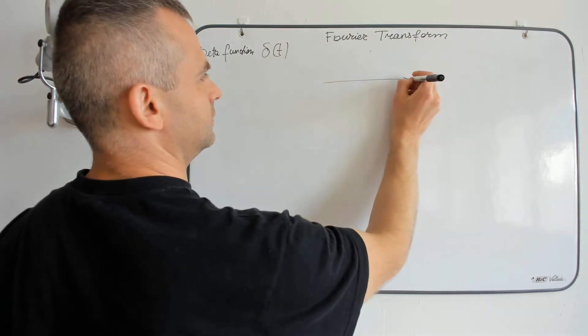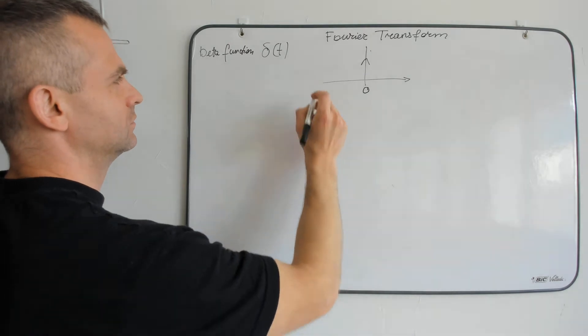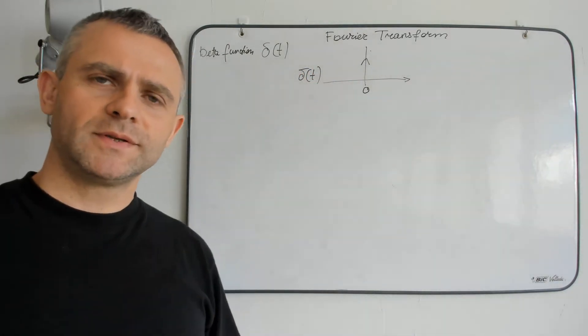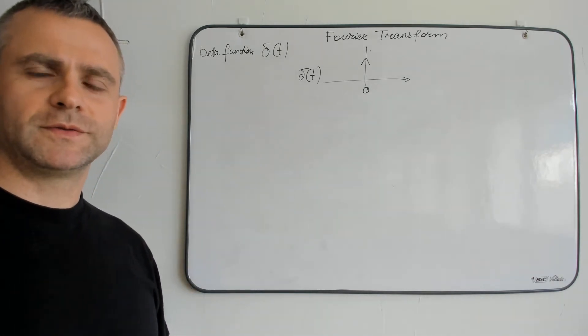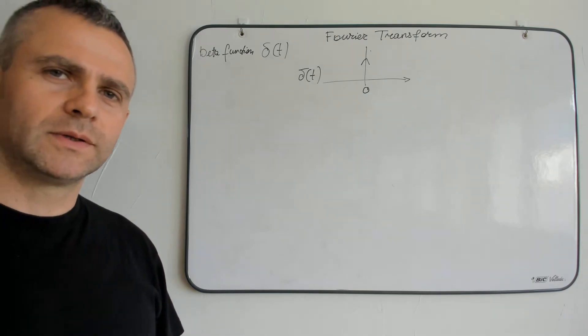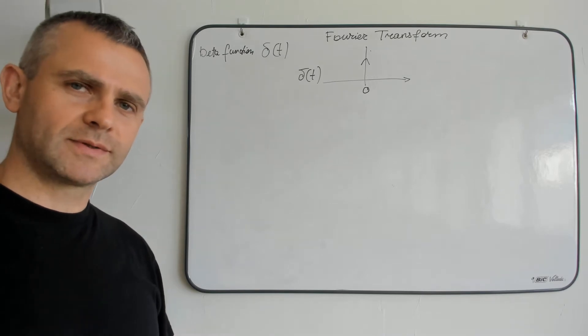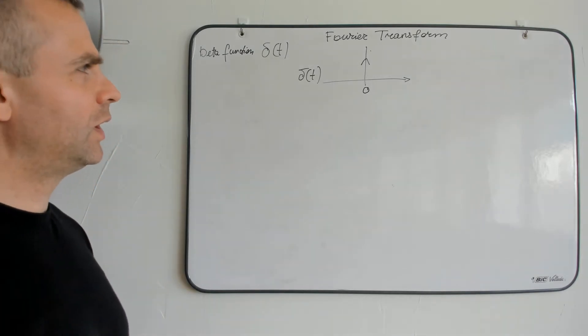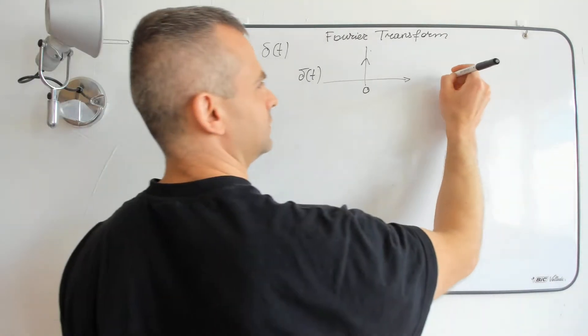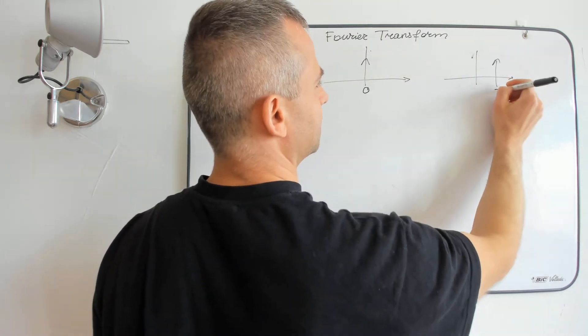Delta function can be represented as a vertical line and it was introduced by mathematician and physician Dirac to simulate an impulse. You might heard about system responses to an impulse or step. We can have no delayed delta function or delayed delta function.